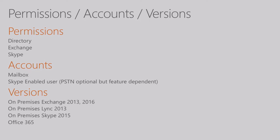From a permissions perspective, we have to have things set up correctly in our directory — whether online or on-prem — in Exchange with rights to accept and auto-reject meetings, and in Skype as a user that can log in. We have to have a mailbox, it has to be Skype-enabled, and it should have PSTN. Even if it's just your rooms using PSTN and you're not leveraging full enterprise voice — we're trying to get everything into a common feeling and usability. If you do have PSTN it's a conference room; if you don't, you can still technically use it without PSTN.